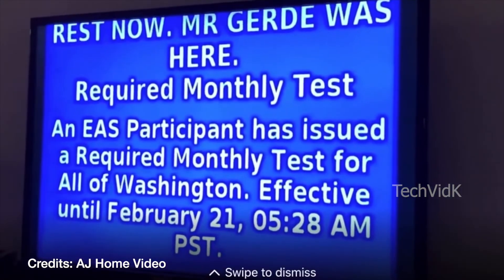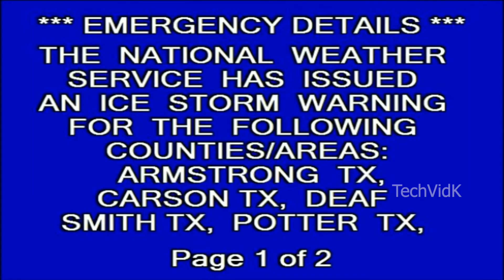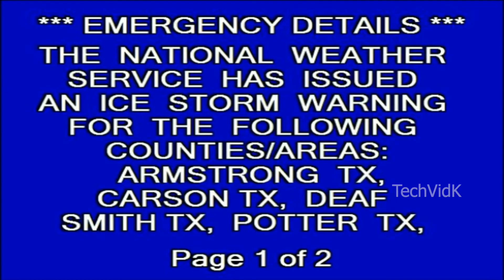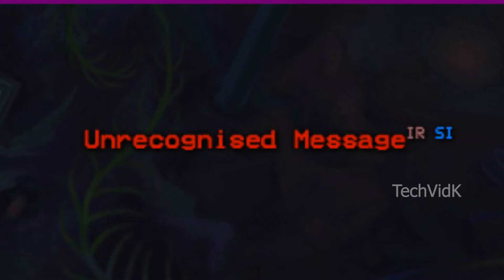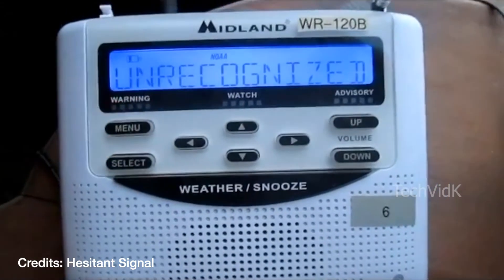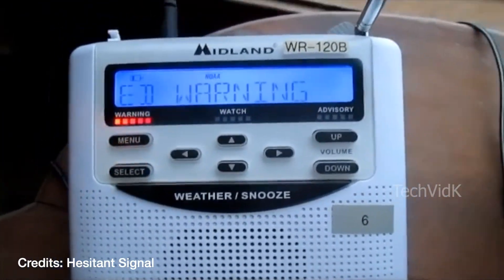Ice storm warning — an alert sent out by the National Weather Service when there is a frozen rainstorm. This will usually show up as a winter weather warning and is pretty rare.